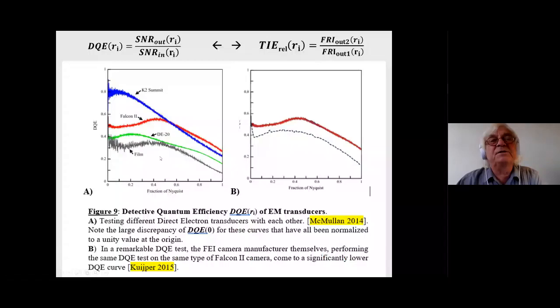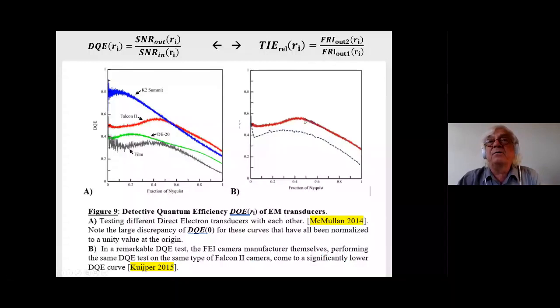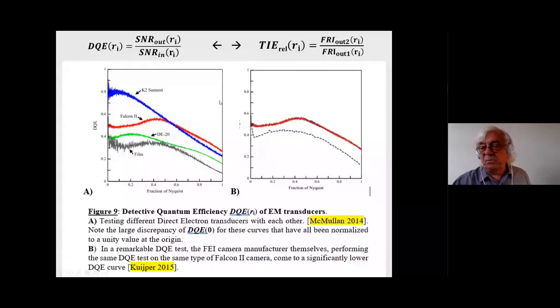The interesting thing is that the DQE measurement done by Richard Henderson's group at MRC and the same thing done by FEI themselves on the same camera type disagree — FEI found their camera is worse than suggested. But the problem is not whether the camera is better or worse — the metric is not good. So all the X-ray equipment we get subjected to is based on this kind of flawed definition.